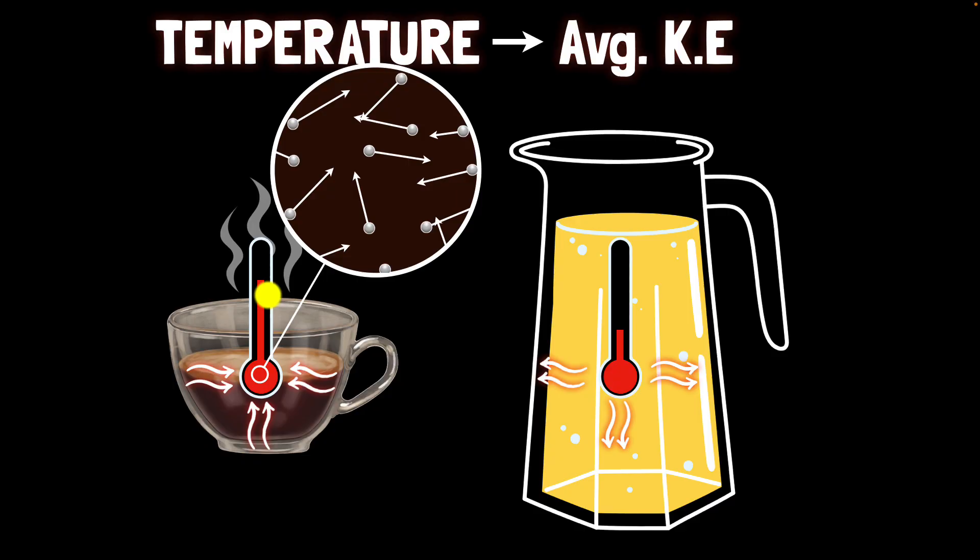And the same thing is happening over here causing the liquid to expand and eventually when the thermometer has the same temperature as that of the coffee it will stop gaining energy and the level will stop rising it would just be stuck over there.